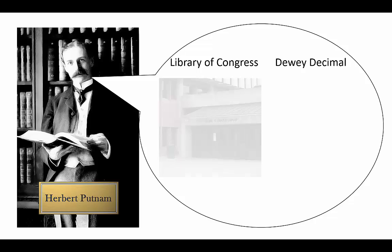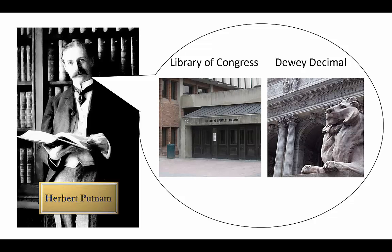However, the Dewey Decimal System is commonly used in public libraries, whereas the Library of Congress classification system is used in most academic libraries.